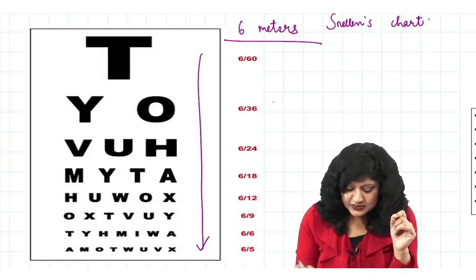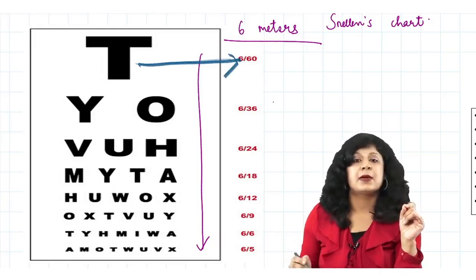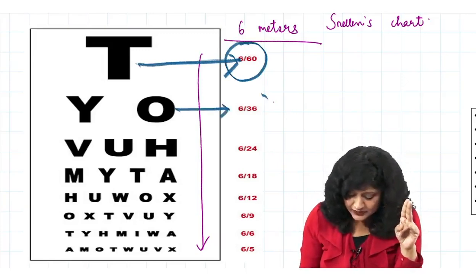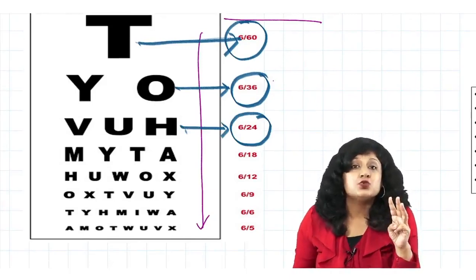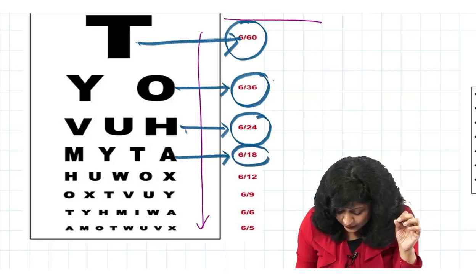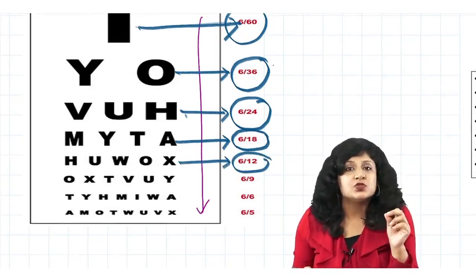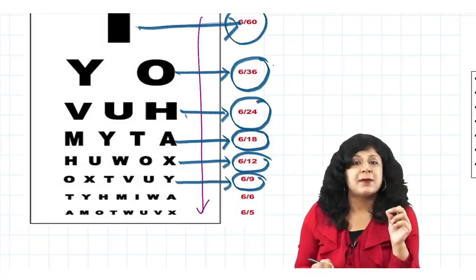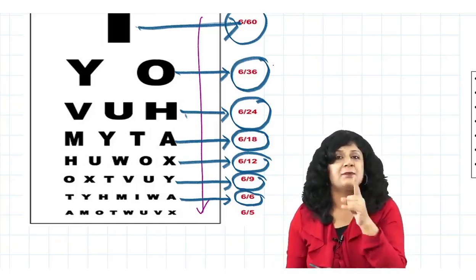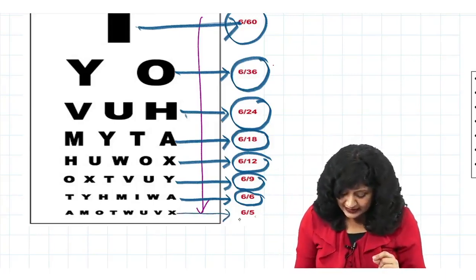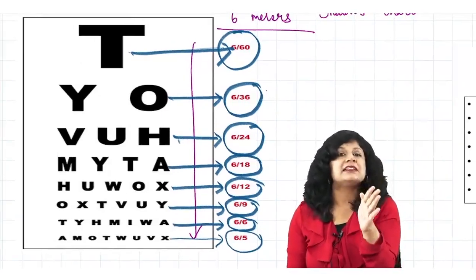When the patient reads these lines, his visual acuity is determined accordingly. Reading the topmost line gives visual acuity 6/60; second line is 6/36; third line is 6/24; fourth line is 6/18; next is 6/12; then 6/9; and finally 6/6. Normal visual acuity is 6/6. Sometimes there is an extra line giving 6/5, but we focus from 6/60 to 6/6.